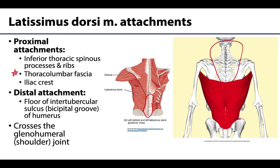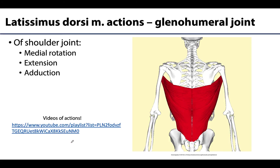The other major difference with the latissimus dorsi compared to the trapezius is that its distal attachment is actually on the humerus, specifically on the floor of the intertubercular sulcus. This means it is actually crossing the glenohumeral or shoulder joint, so it will directly affect movements capable at this joint. Specifically, the latissimus dorsi will play a large role in extension — pulling back from a flexed position — as well as adduction, bringing back towards anatomical position, and also medial or internal rotation, so the anterior portion of the humerus faces more medially.